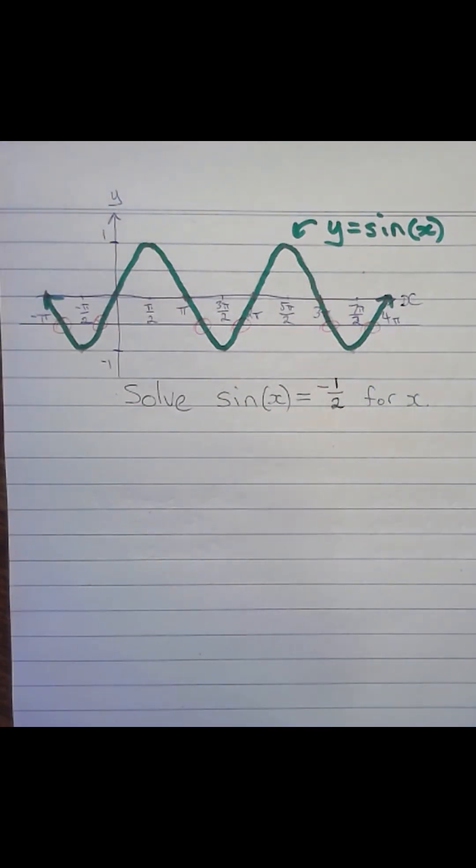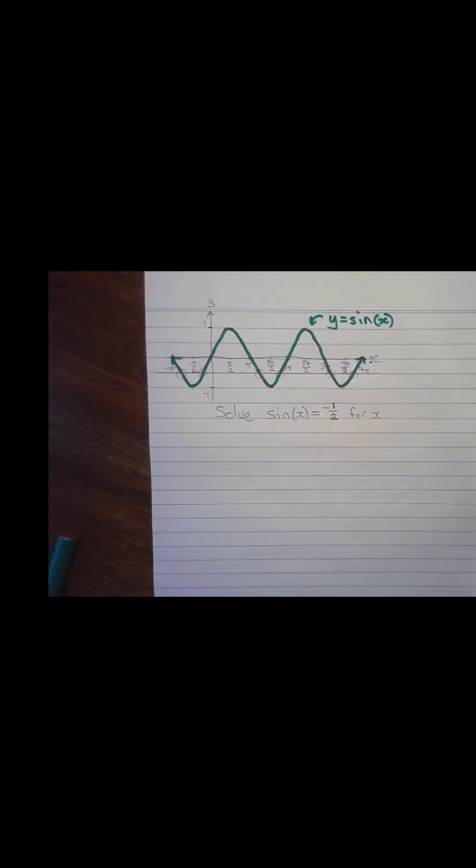And you can imagine if you were able to draw the entire sine curve, which goes on forever towards positive infinity, and forever towards minus infinity, that you'd get infinitely many of these points where the curve cuts over the line y equal to minus a half.